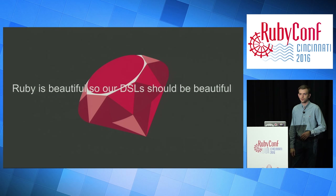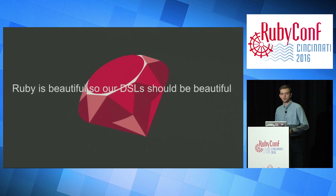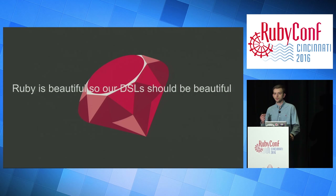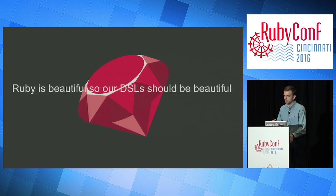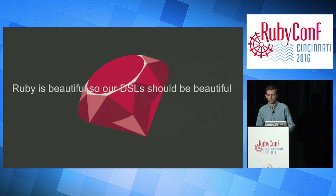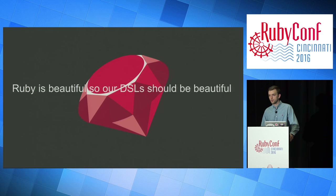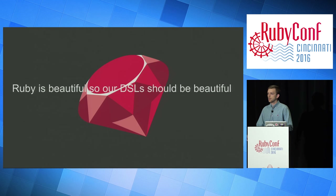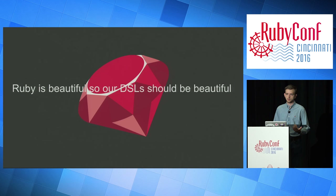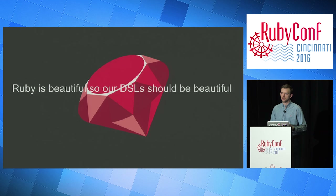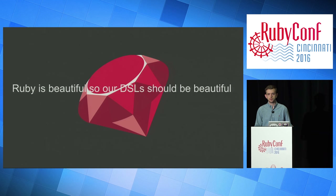I want to start off by saying Ruby is beautiful, so our DSLs should be beautiful. Ruby in general is known for being a very human-readable language, and I think our DSLs should live up to this reputation of being readable yet extremely powerful. This talk is going to go over some of the common ways developers use the dynamic nature of Ruby to achieve these DSLs. I went through many popular libraries, categorized each time they use metaprogramming or lambda functions, and organized them into use cases or best practices.